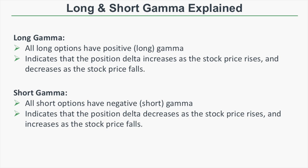What does it mean when a position has long or positive gamma? First of all, all long option positions have positive or long gamma. This indicates that as the stock price rises, the position's delta will increase, and as the stock price falls, the position's delta will decrease. All short option positions have short or negative gamma, meaning the position delta decreases as the stock price rises and increases as the stock price falls.